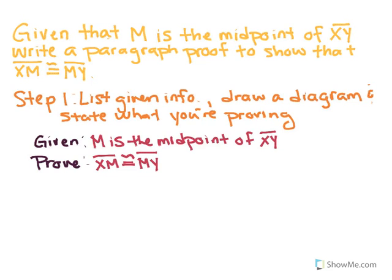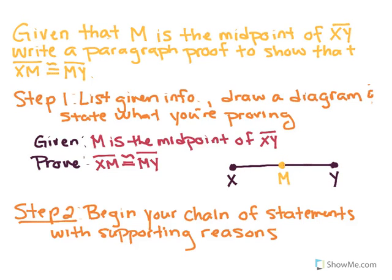Now comes the last part of our first step — drawing a diagram. There's my picture. The next step is the big meat and potatoes: the proof itself. We're going to begin our chain of statements with supporting reasons. Every time you create a statement in if-then form, you must always state what you're trying to show and what supports it — this postulate, this theorem. To start, we state: if M is the midpoint of segment XY, what does that actually mean?